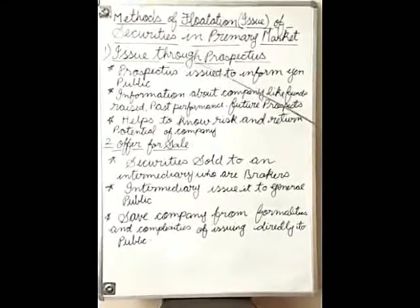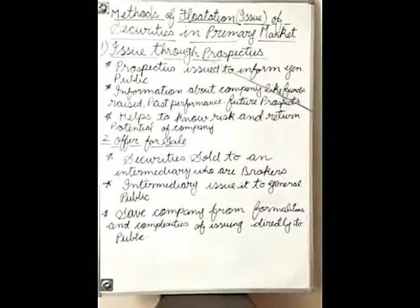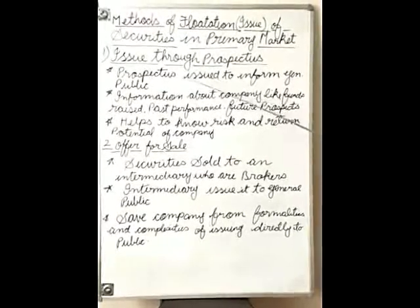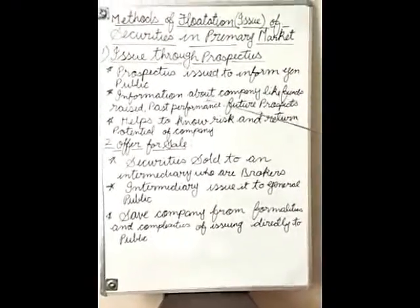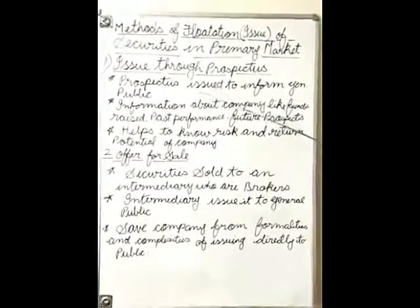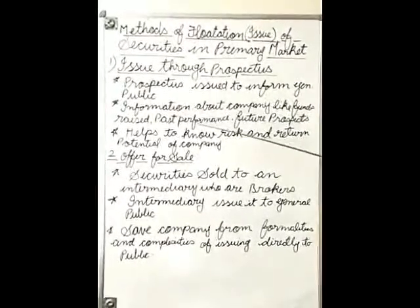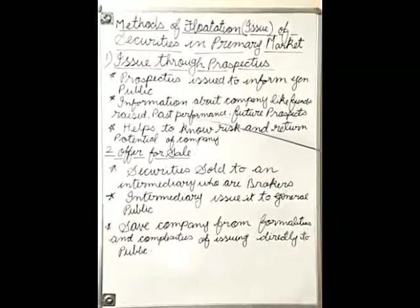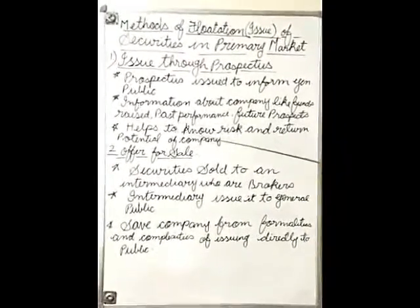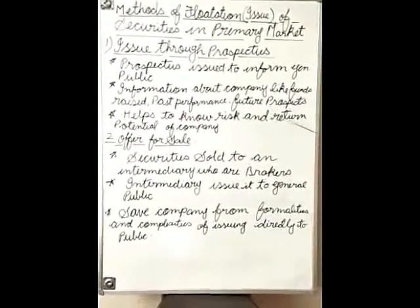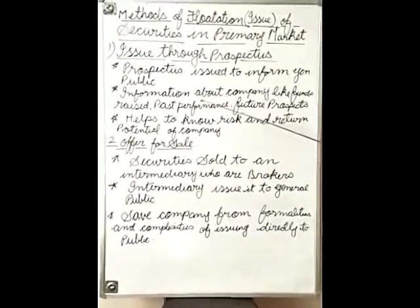The first method of issue is issue through prospectus. A prospectus is a written document in which the general public is informed about the issue in the primary market. The information declared by the company in the prospectus includes how many funds are raised, from which sources, the past performance of the company, and its future plans. This information helps the saver understand the risk and return potential and decide whether to invest in that company or not.